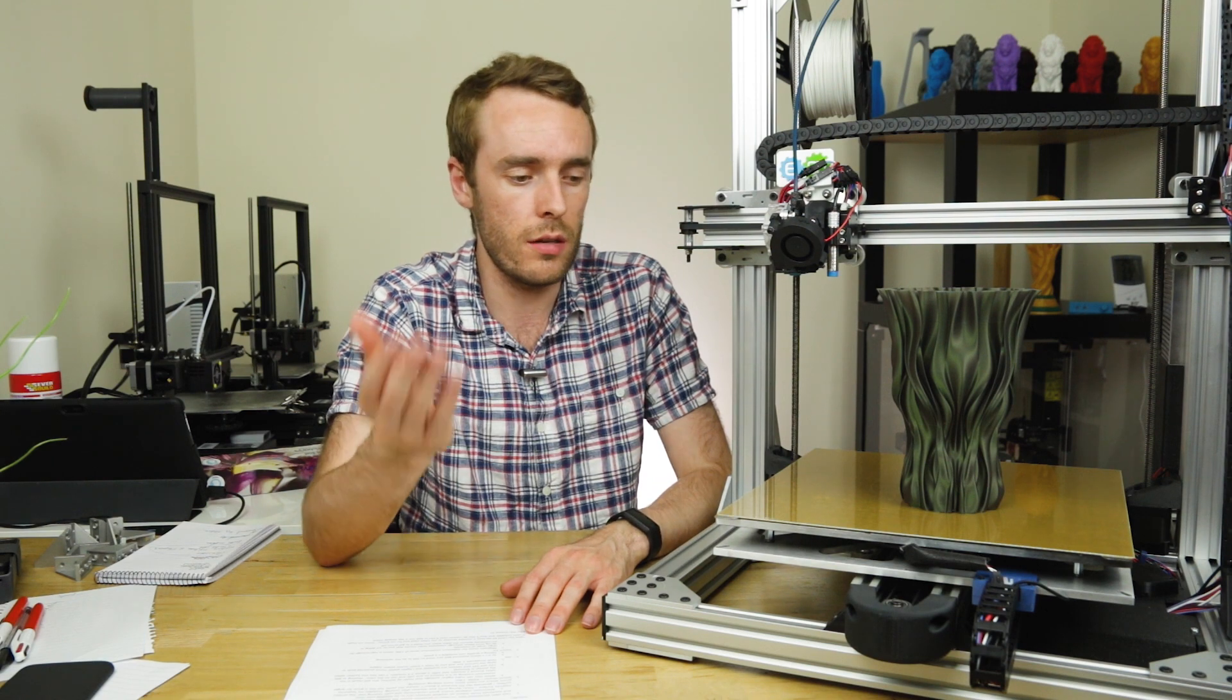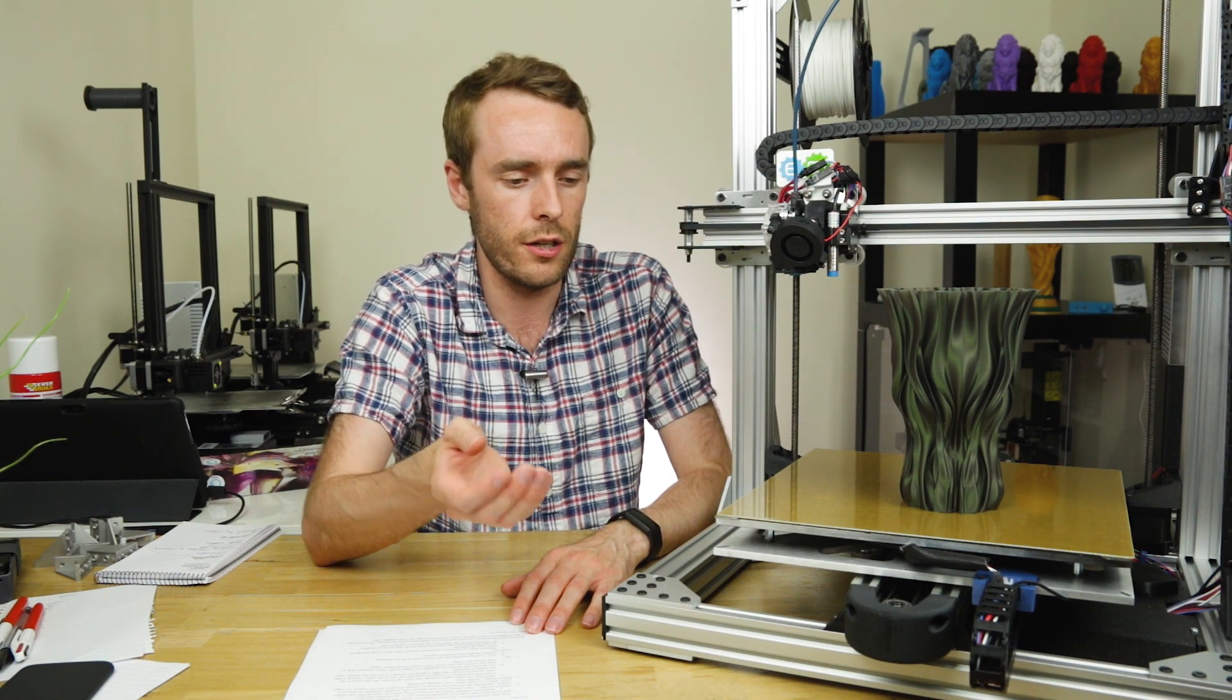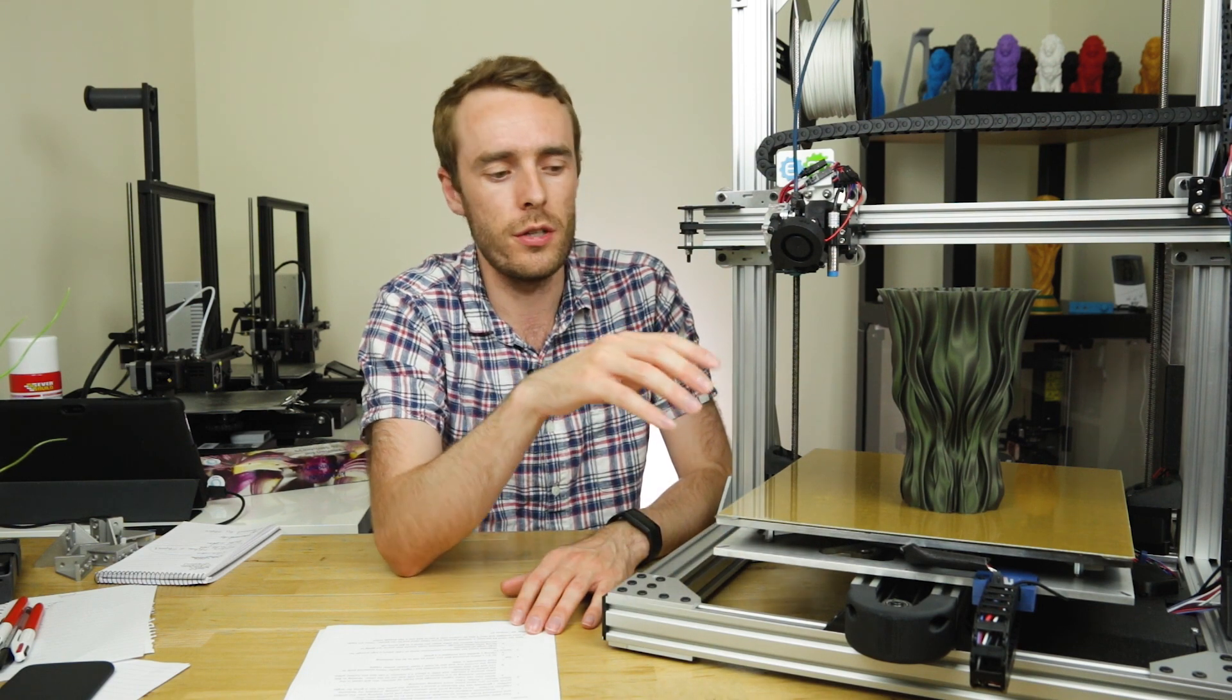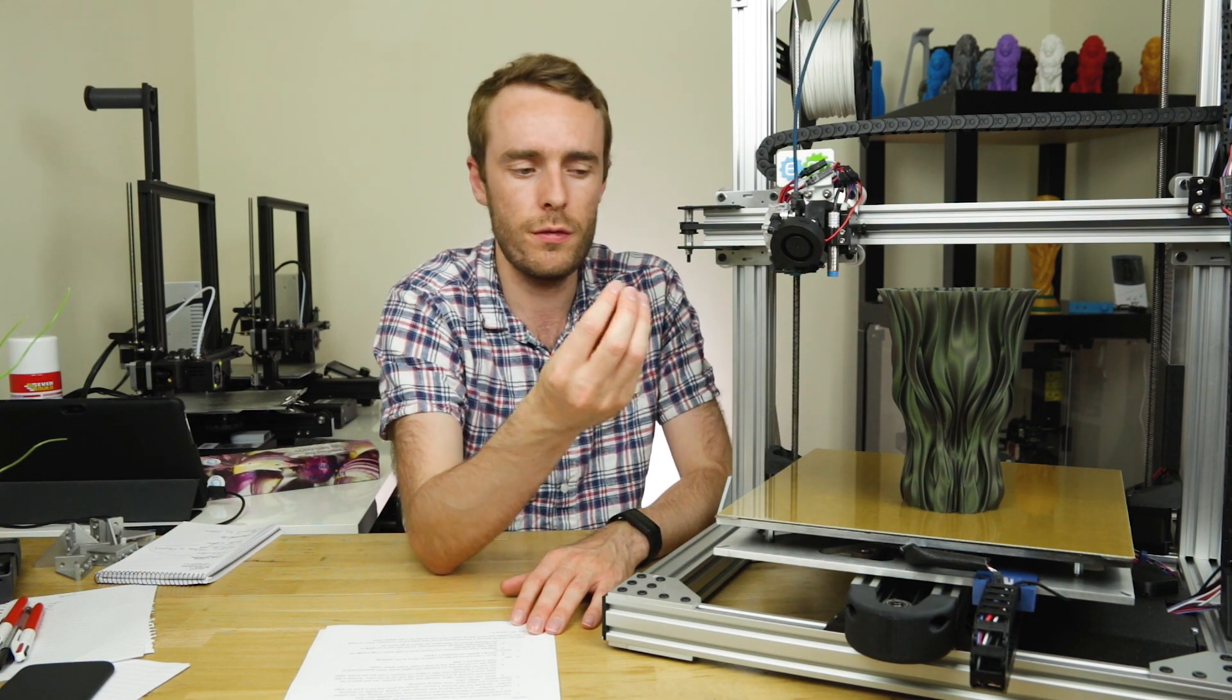However, as soon as it cools down, then parts do come off really, really easily. Almost to the point where you don't need the flexible sheet. So for printing fairly small things on this sheet, I tend to not even remove the flexible plate. I just take the print off or just give it a little nudge and it'll come straight off.